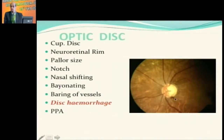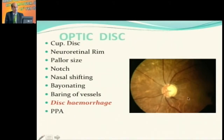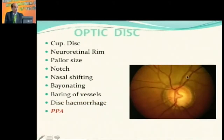You have to look for disc hemorrhage. If most patients are progressing, they will have disc hemorrhage, which will subsequently disappear and leave a significant RNFL defect. You also have to assess the parapapillary atrophy and know how to differentiate glaucomatous parapapillary atrophy from aging or myopic parapapillary atrophy.